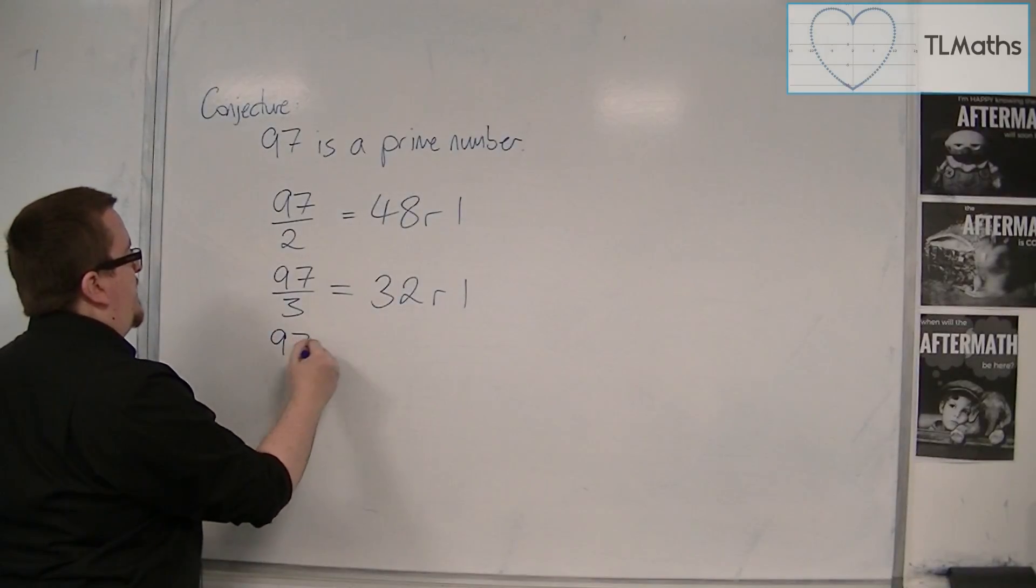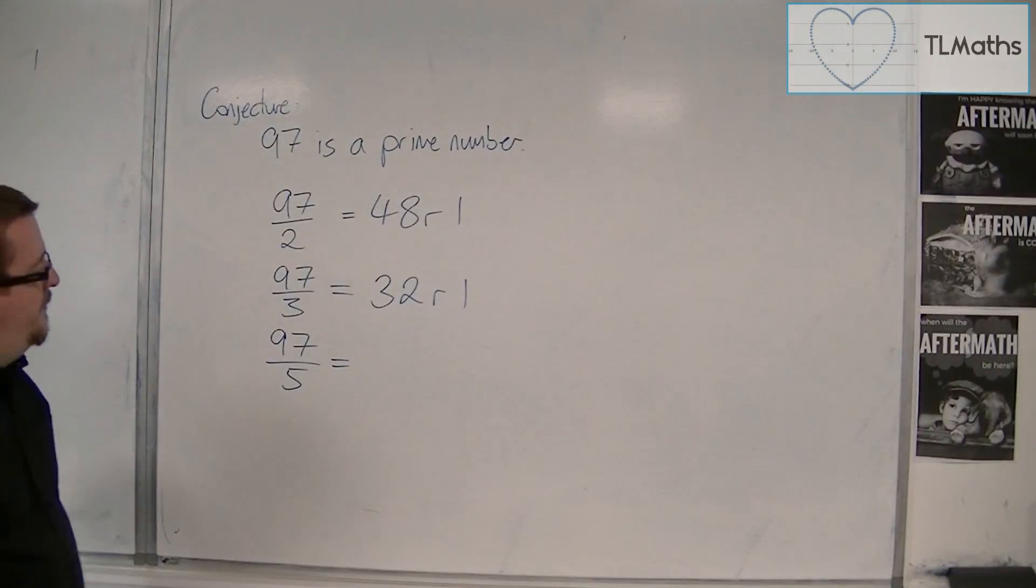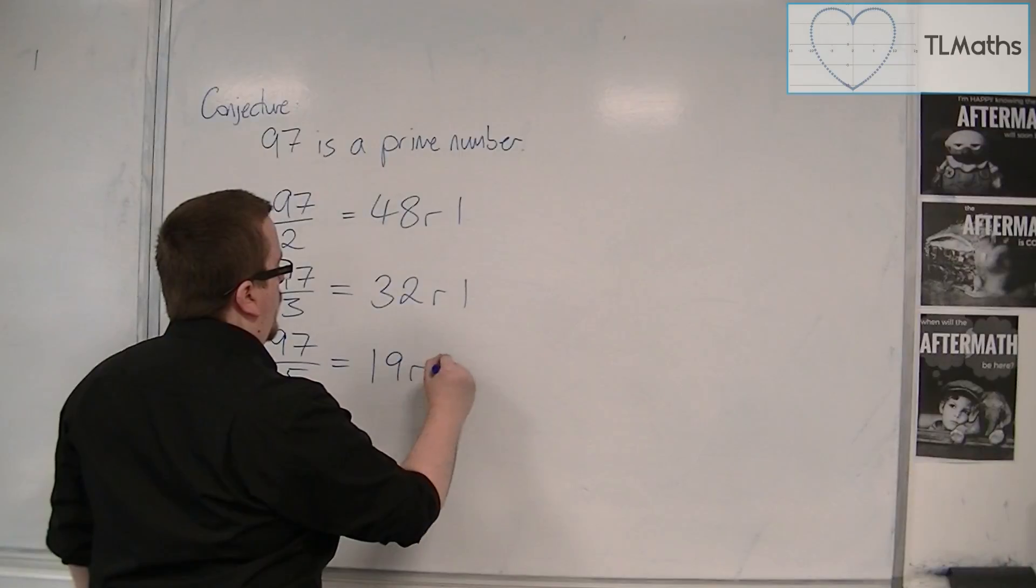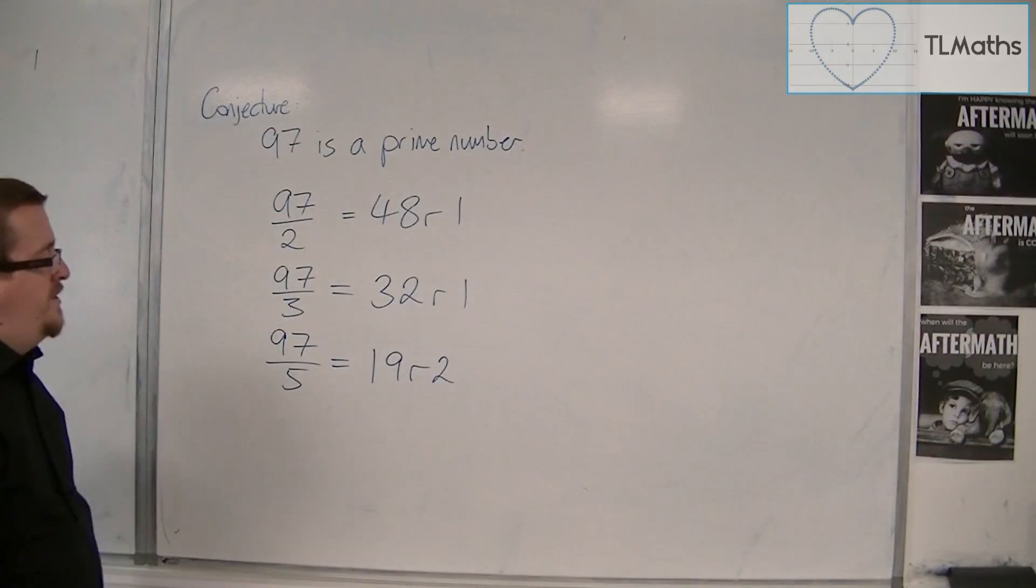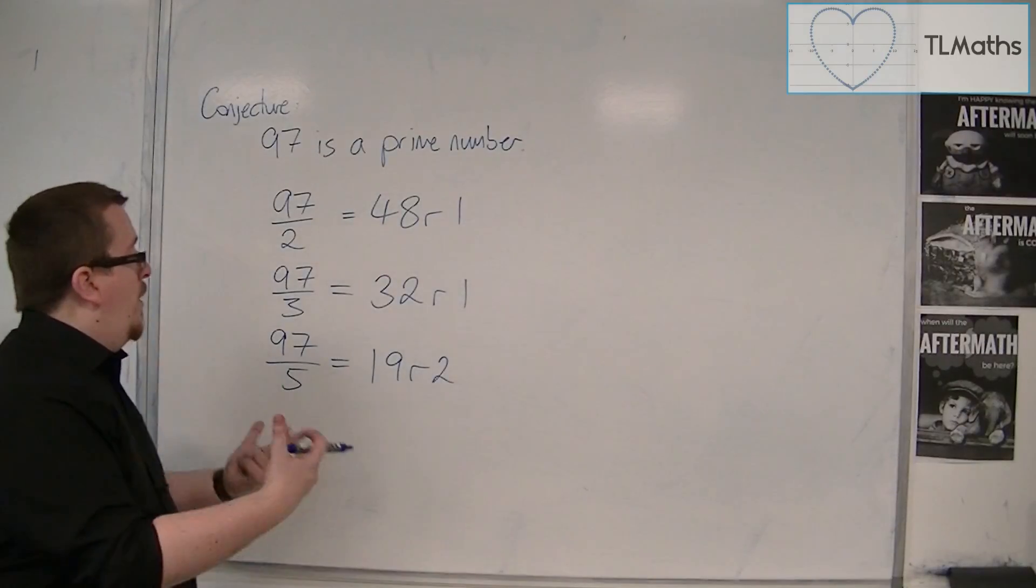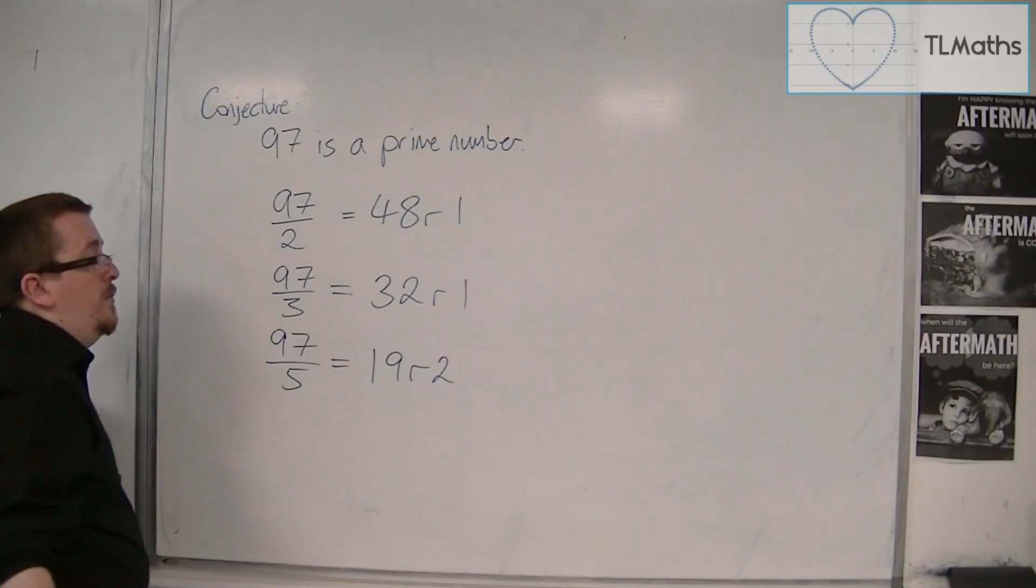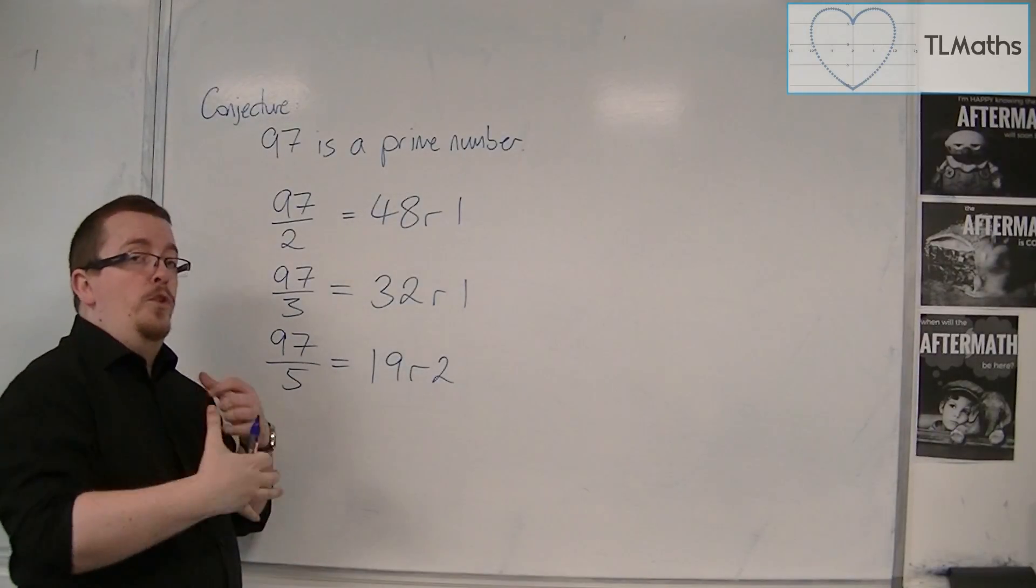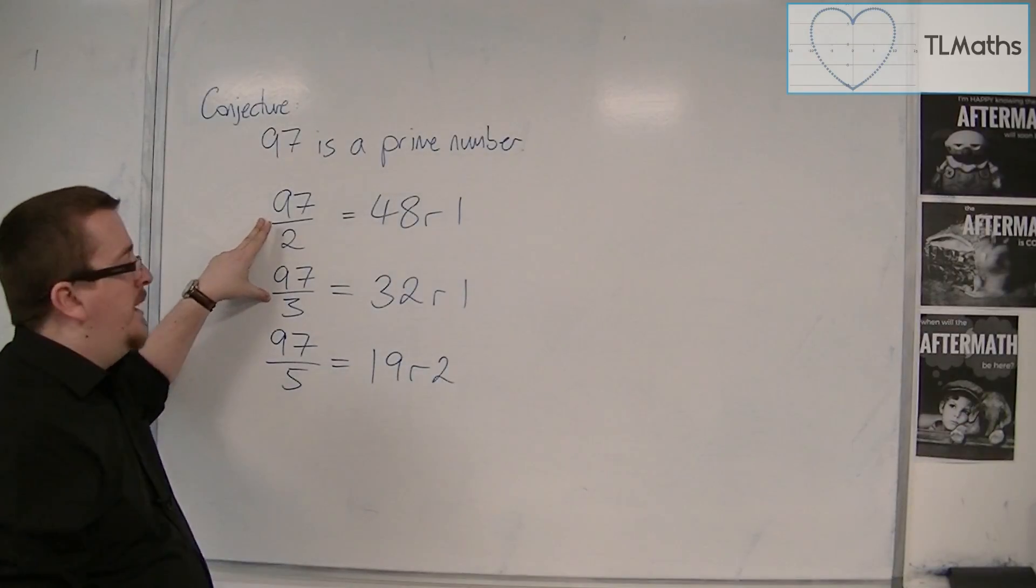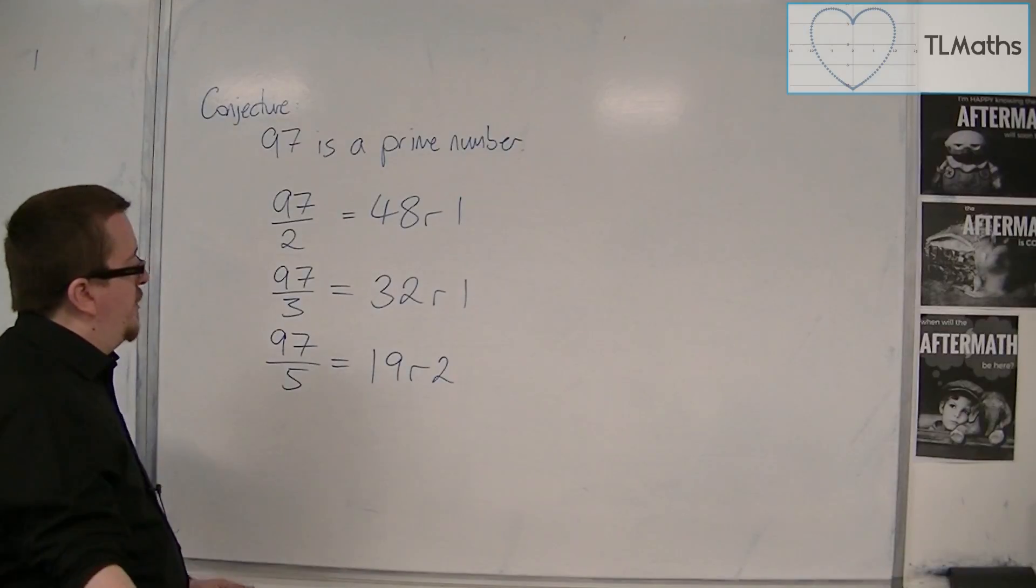Next one I'd try is 97 divided by 5. So 97 divided by 5 goes in 19 times remainder 2. So 5 doesn't work. Now, would I try 6? Well, I wouldn't try 6 because I know that 2 didn't work and 3 didn't work. 6 would work if both 2 and 3 worked, because 2 times 3 is 6. So I wouldn't bother trying 6.